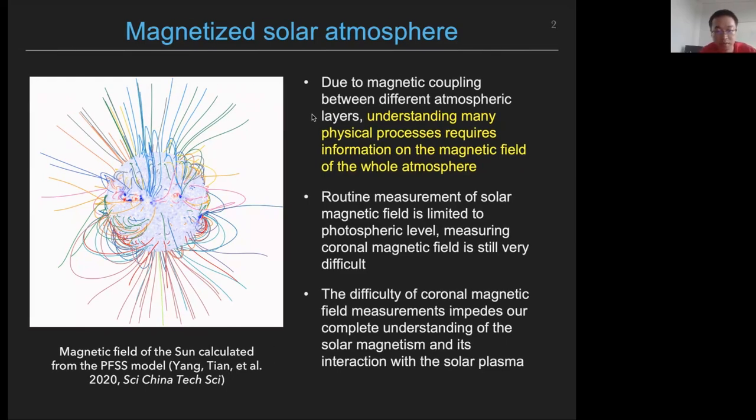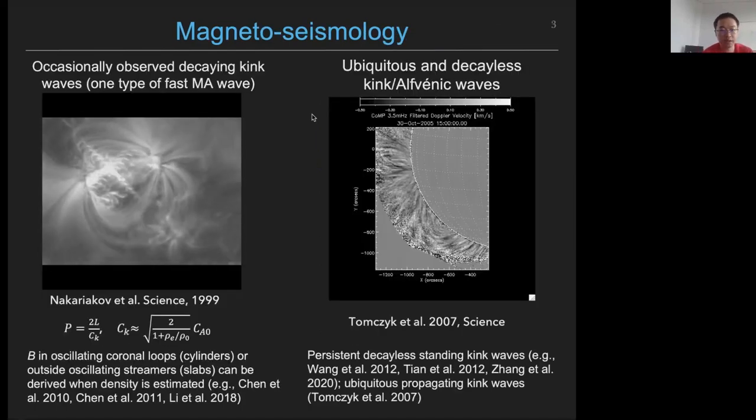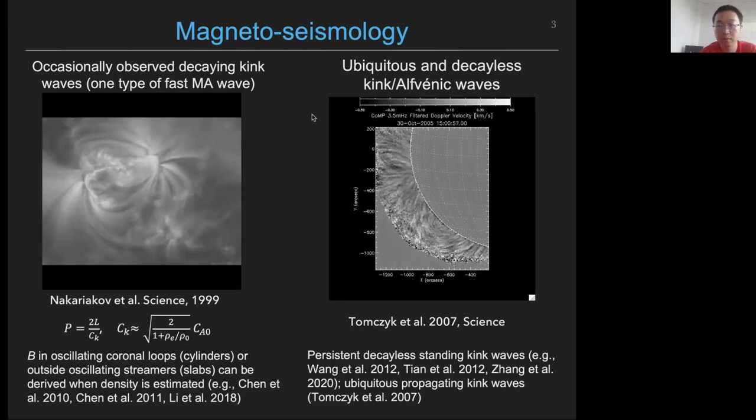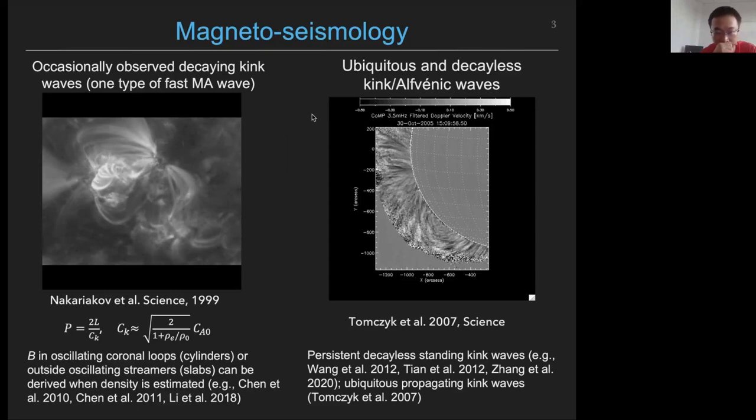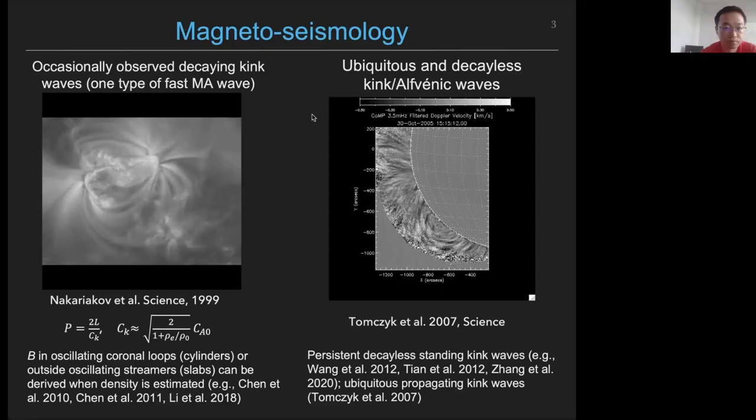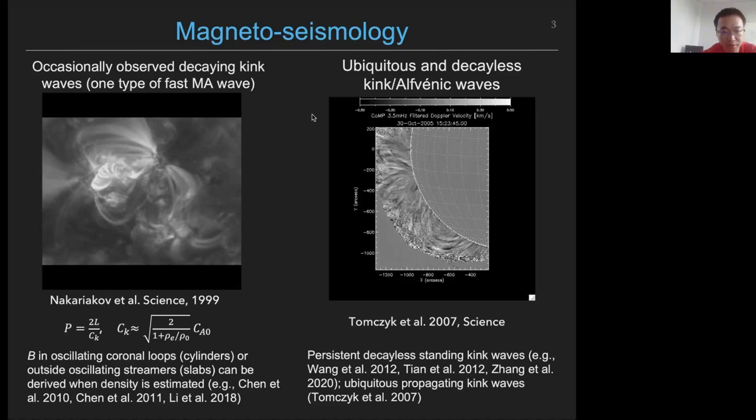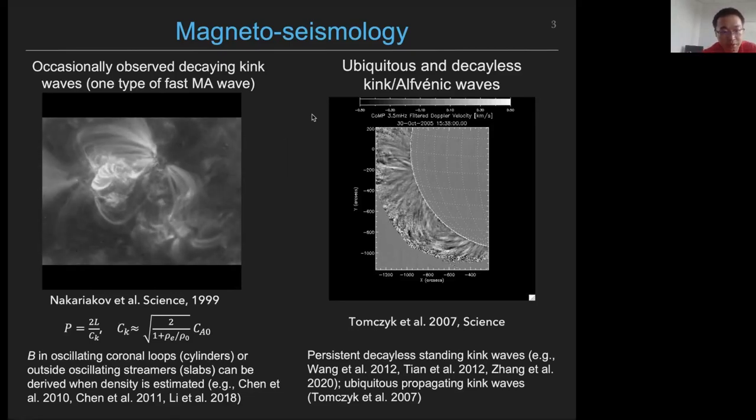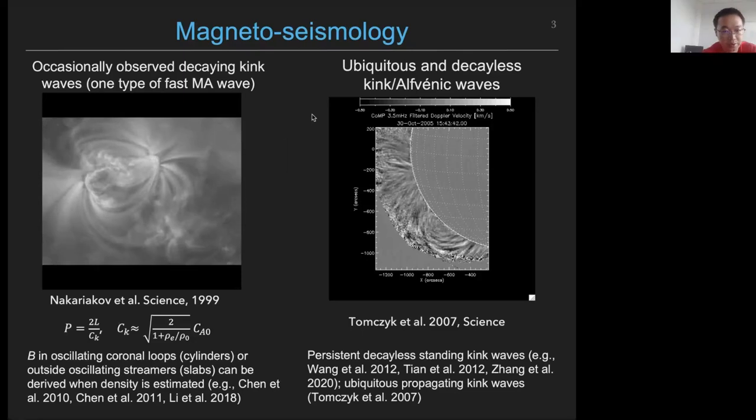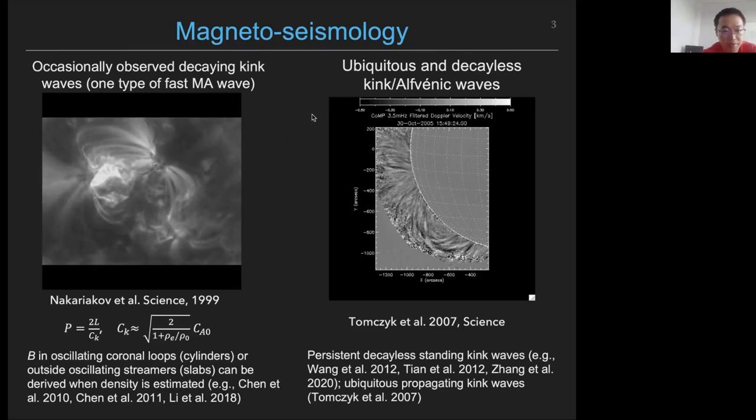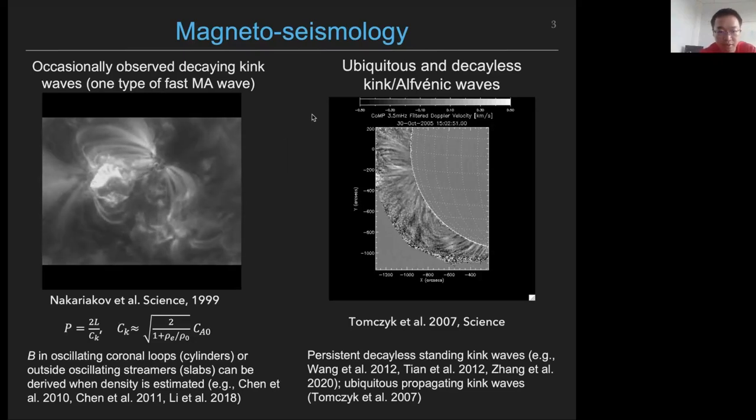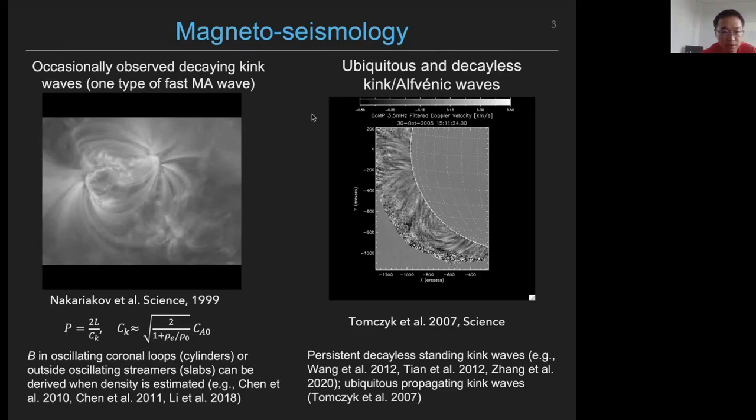In the past two to three decades, a technique called coronal seismology or magnetoseismology has been widely used for coronal magnetic field measurements. This method makes use of MHD oscillations or waves that are observed in coronal loops or other coronal structures. From the MHD theory, the observed wave parameters can be used to infer the average magnitude of the magnetic field in the oscillating structures.